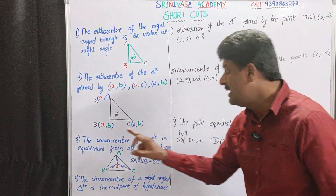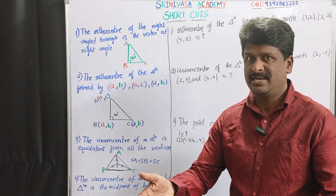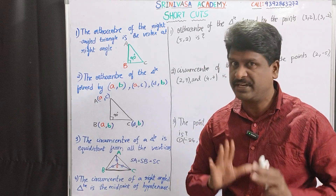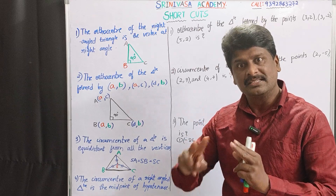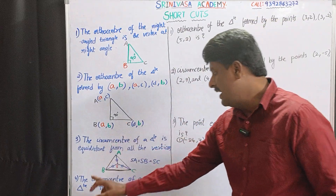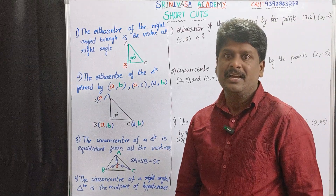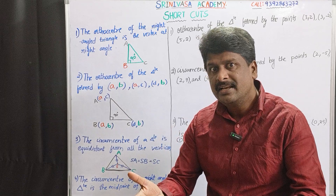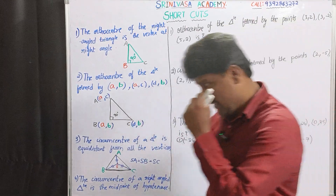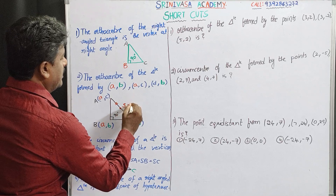The circum center of a triangle is equidistant from all the vertices. The circum center property is that it should be equidistant from all three vertices. I am not saying that the circum center always lies interior of the triangle — sometimes it may be on the triangle, sometimes outside. But whatever the position, it should be equidistant from all three vertices. The circum center of a right-angled triangle is the midpoint of the hypotenuse. In the case of a right-angled triangle, the circum center lies on the triangle, and exactly the midpoint of the hypotenuse will be the circum center.